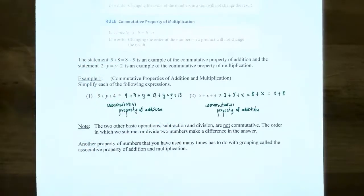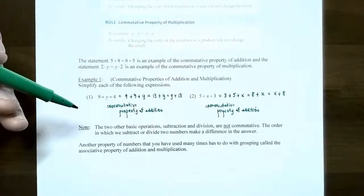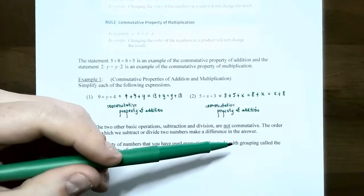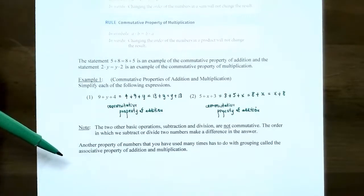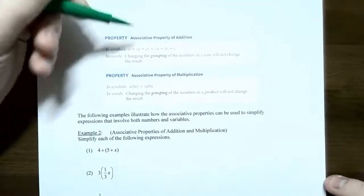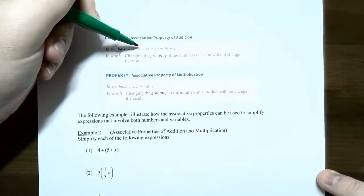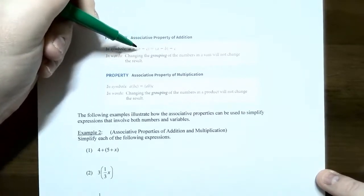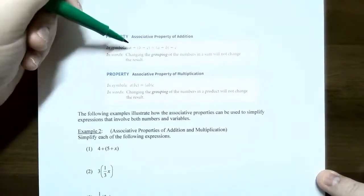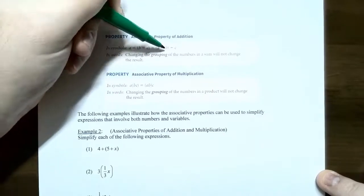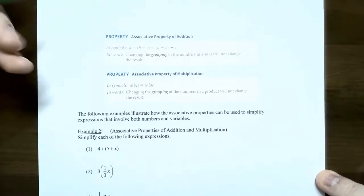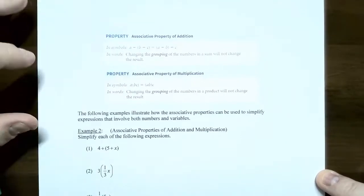There's another property of real numbers that comes up when dealing with grouping symbols: the associative property of addition and multiplication. The associative property of addition says if you have a real number plus a group of two other real numbers (b plus c), it doesn't matter how you group the sum. You can group the first two numbers (a plus b) and then add c outside. Changing the grouping of numbers in a sum will not change your answer.